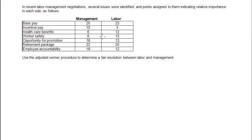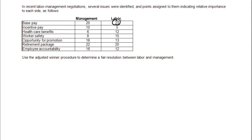So starting with base pay, labor gave it more points than management. Instead of pay, management would win that. Healthcare benefits and worker safety, labor assigned it more points. And then the other three would go to management because they gave it more points.